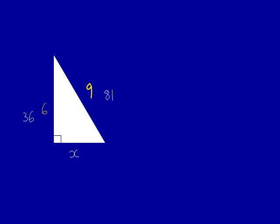Again, we must square the sides that we know. 9 times 9 is 81 and 6 times 6 is 36. We write them on the triangle as I've shown here.